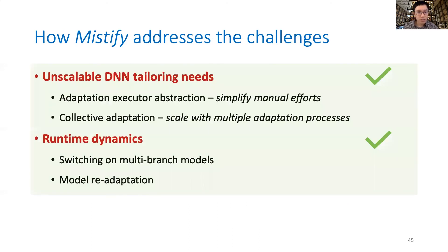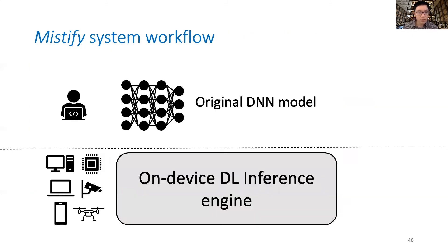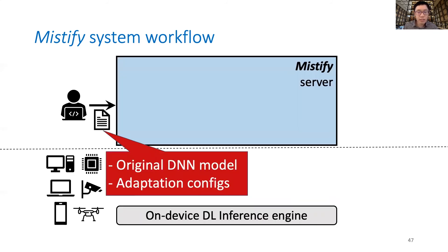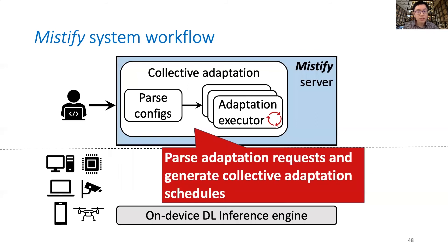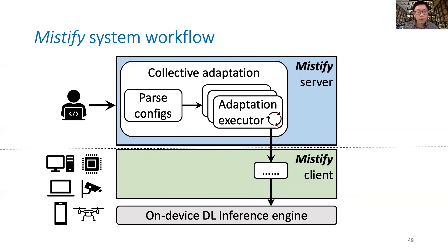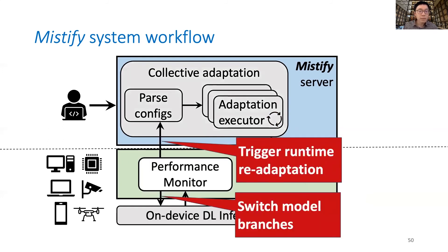Now we've covered how to resolve both challenges. Putting it all together: starting from an original pre-trained model, users first summarize the adaptation configurations. Then, the Mystify server generates collective adaptation schedules based on the user-specified configurations and executes them efficiently at the server side. Eventually, the adapted models are distributed to the client and loaded into the inference engine. During runtime, the performance monitoring module on the Mystify client will invoke branch switching and initiate re-tailoring requests in the background when detecting changes in the execution environment that make the current model unsuitable.